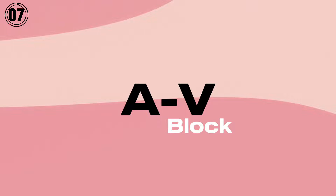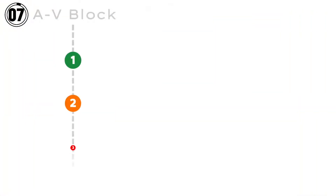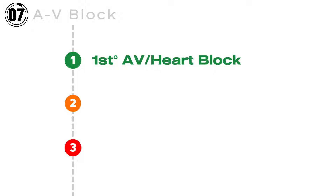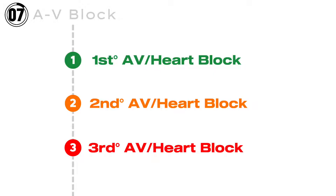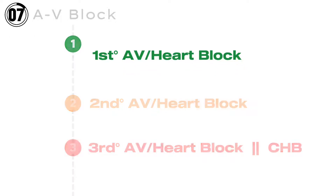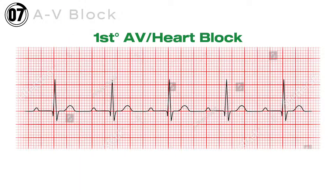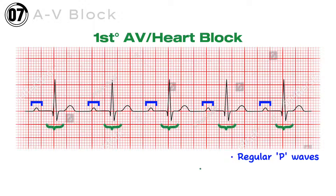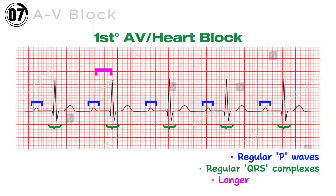ECG number 7: AV Block, or Heart Block. AV Block has three types: first-degree heart block, second-degree heart block, and third-degree heart block, or complete heart block. In the first-degree heart block, the ECG looks just like a normal sinus rhythm — it has regular P waves followed by regular QRS complexes — but the PR intervals are quite longer than usual. The first-degree heart block is usually harmless and not much of a concern.